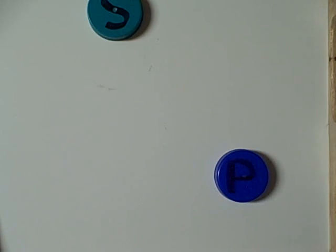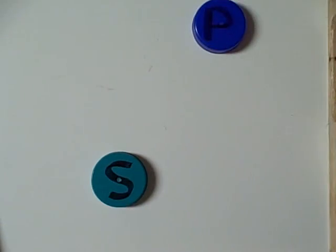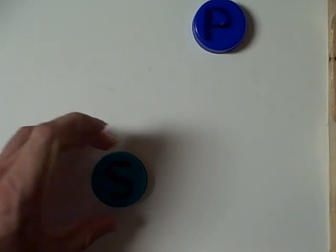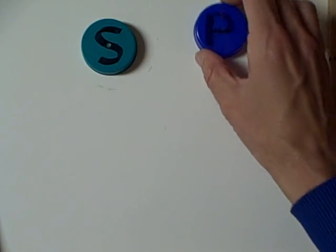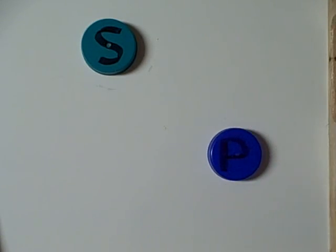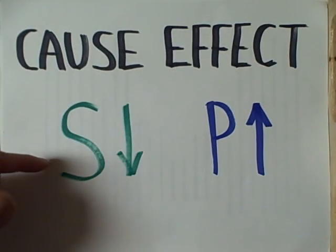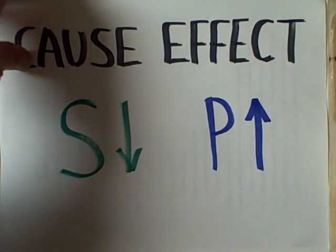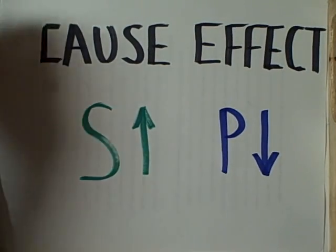Supply tends to produce an opposite effect in price. Total amount supply decreases, prices go up like with gasoline now. Supply goes up like it happened with gasoline in the 80s, price tends to go down. So when we see a decrease in supply, price goes up. We see an increase in supply, price goes down.